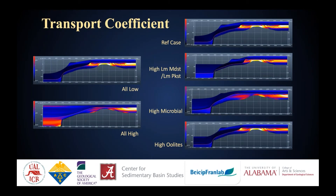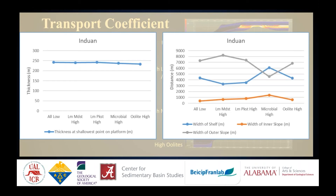Sensitivity of architecture to the transport and redeposition of carbonate sediments has been measured by varying the transport coefficient of each carbonate sediment type. The transport coefficient essentially controls the capacity of each sediment type to be transported for a given slope angle. A wide range of transport coefficients were tested. The analysis suggests that platform or shelf geometry is most sensitive to the transport coefficient of the microbialites, more than other sediments, while changing the transport coefficient doesn't substantially affect the thickness on top of the platform.